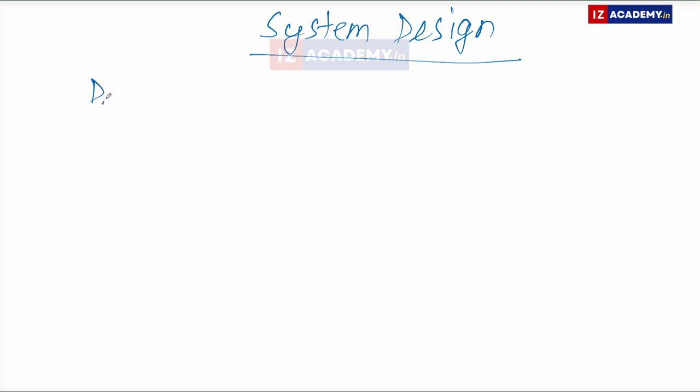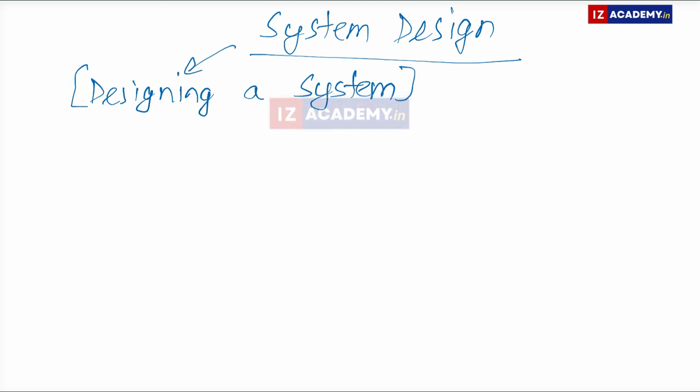Well, as you can see the words, it essentially means designing a system. And what is a system? It could be an application, whether it be a web application or a mobile application. So it is actually designing of a system. That is the study of system design, and what do we exactly mean by designing of a system?